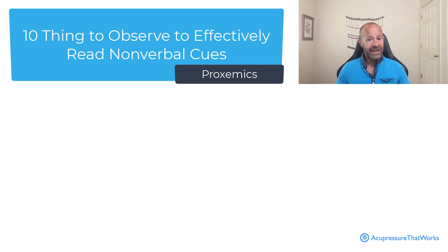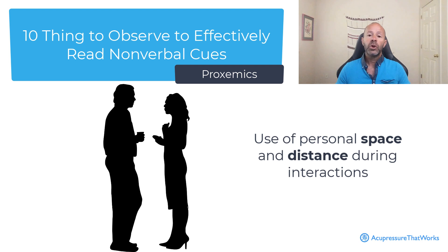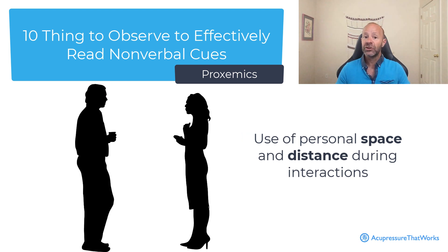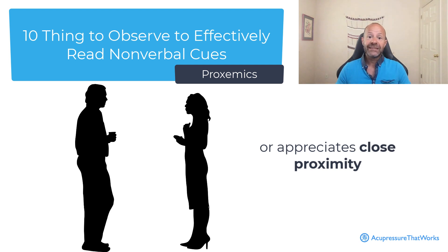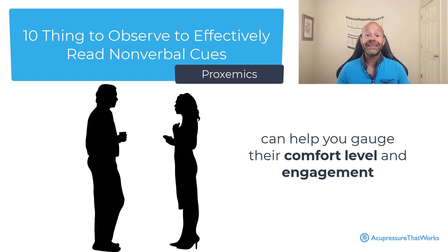Proxemics refers to the use of personal space and distance during interaction. Notice how close or far someone stands or sits in relation to others. The level of comfort with physical proximity can vary among individuals and cultures. Assessing whether someone prefers more personal space or appreciates close proximity can help you gauge their comfort level and engagement.